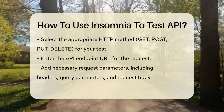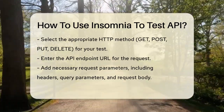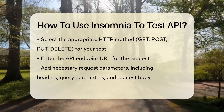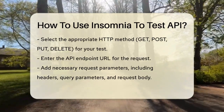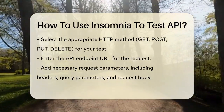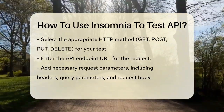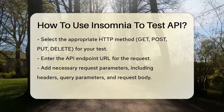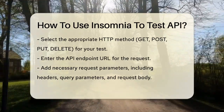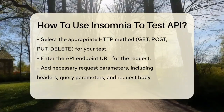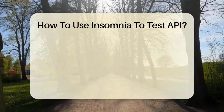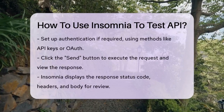Once you've set up your request, click the Send button to execute it. Insomnia will then display the response, including the status code, headers, and the body of the response. This is where you can see if your API request was successful and what data was returned.